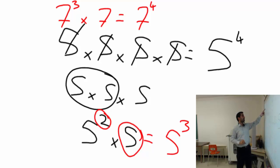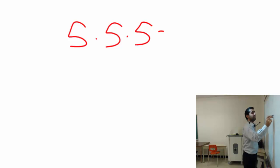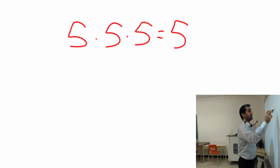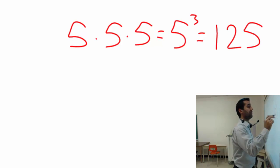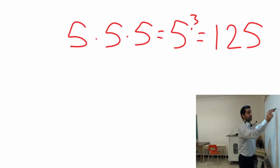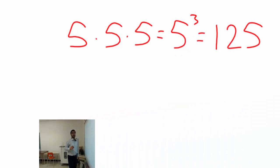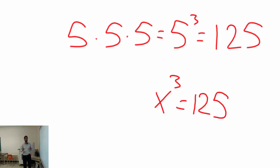Lastly, 5 times 5 times 5 is 5 to the power of 3, which equals 125. Now, my question is: if you don't know the number 5 and you consider it as x, then x to the power of 3 equals 125 — how do you figure out what x is?